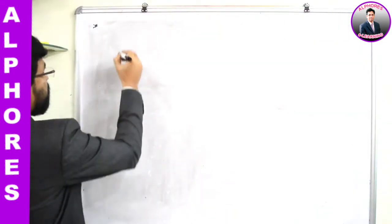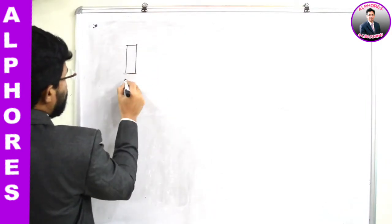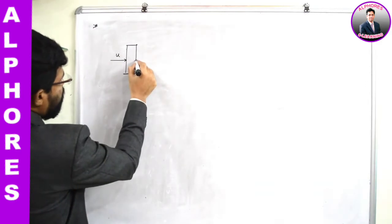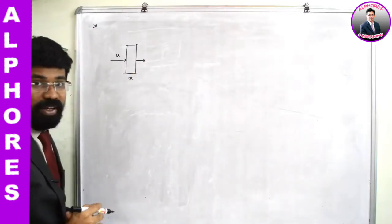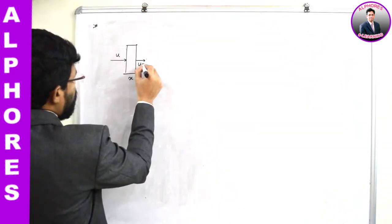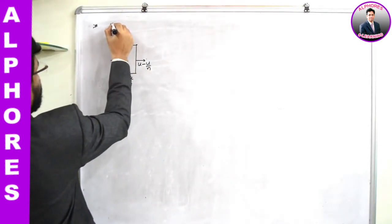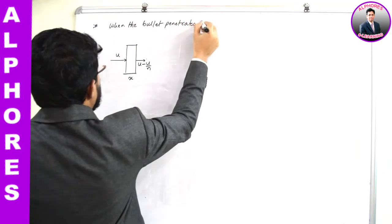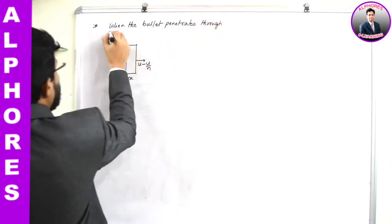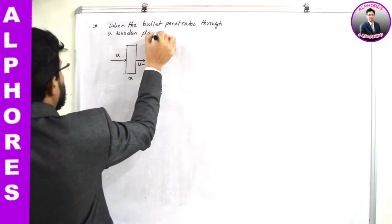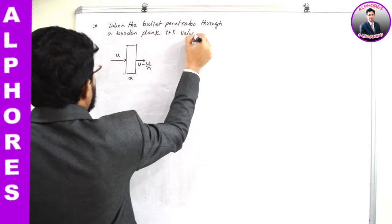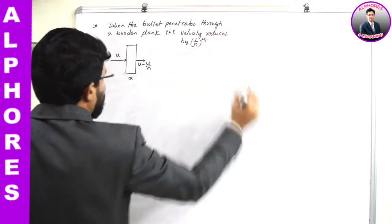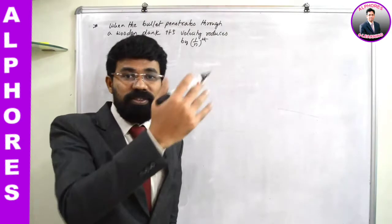I will describe the situation. Let there be a wooden plank with thickness x. When the bullet is about to penetrate, its velocity is u. When it is leaving from the other side, its velocity is reduced by 1/n — so the velocity becomes u - u/n. The question is: how many such planks are required to stop the bullet?